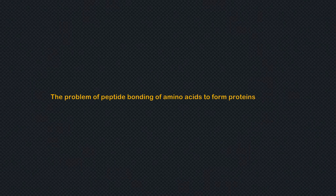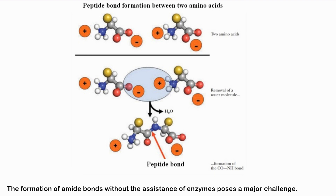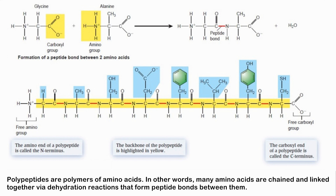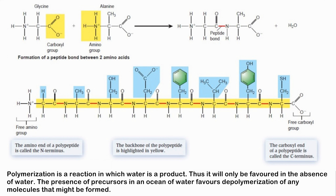The formation of peptide bonds without the assistance of enzymes poses a major challenge. Given an ocean full of small molecules of the types postulated by origin-of-life enthusiasts, the next question is about polymerization. Many amino acids are chained and linked together via dehydration reactions that form peptide bonds. Polymerization is a reaction in which water is a product — thus it will only be favored in the absence of water. The presence of precursors in a medium of water favors depolymerization of any molecules that might form.